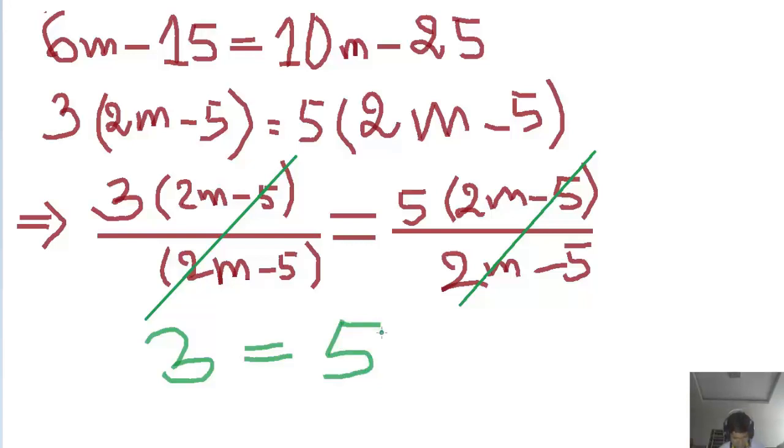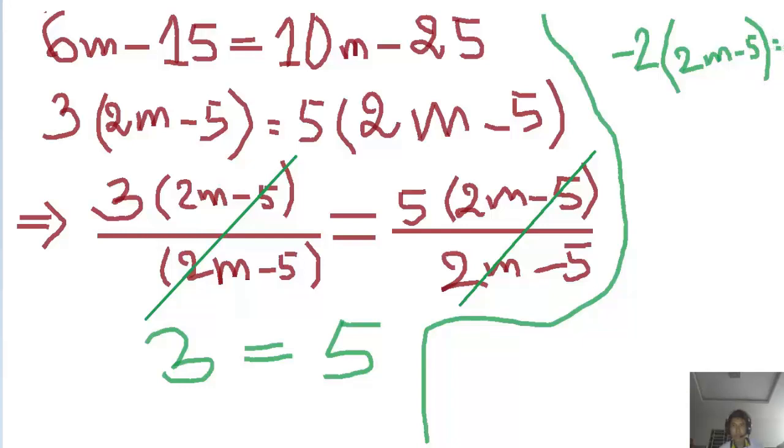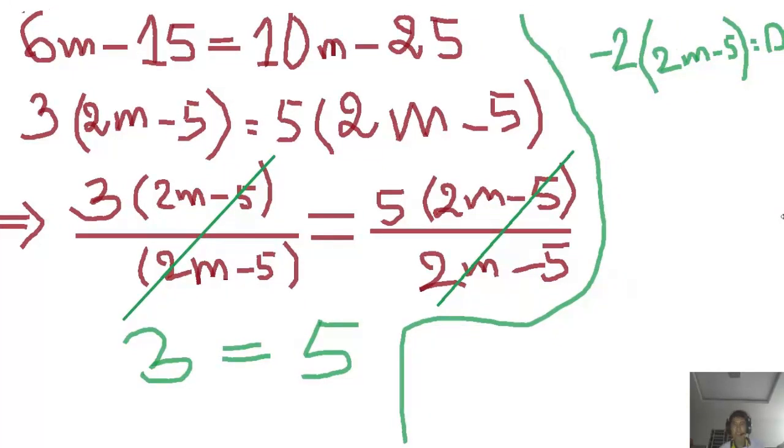So you know that when like this, we can write minus 2, yes, minus 2 times (2m minus 5), yeah, equals 0. Equals 0, like this.